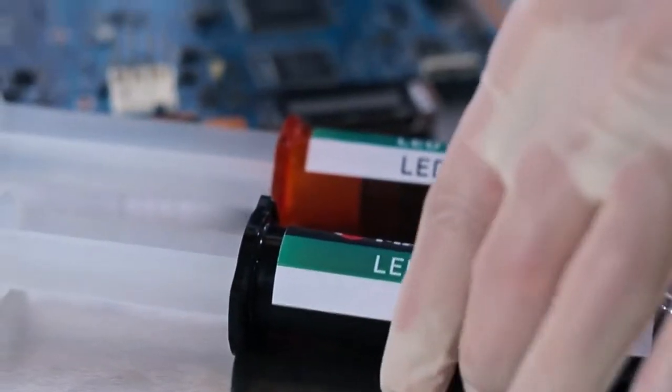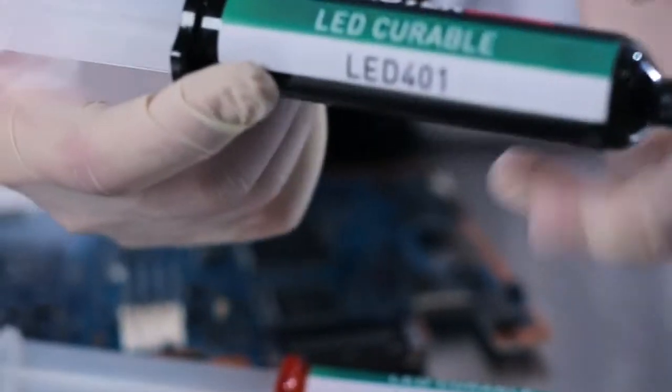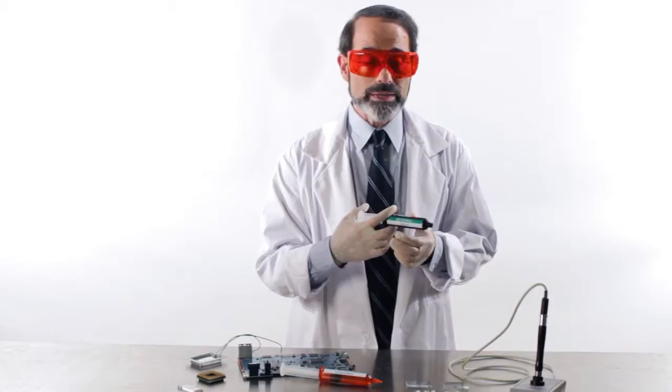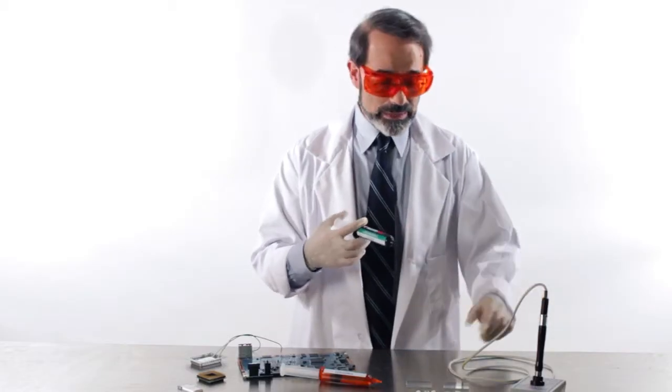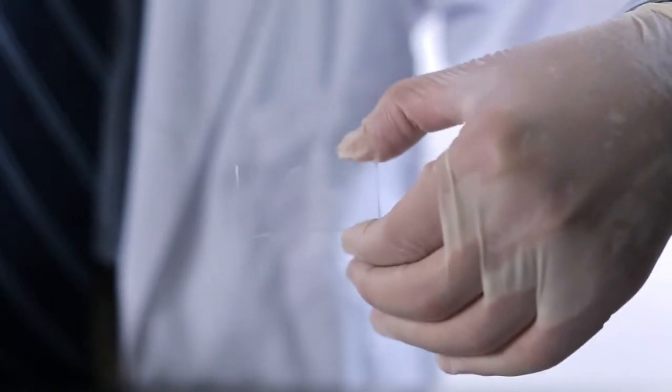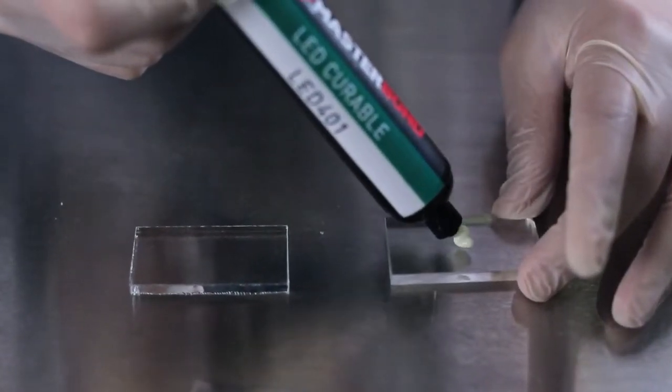Here we have a syringe filled with Master Bond LED 401, an LED lamp, and a glass substrate. Using the syringe, I will apply the adhesive to the glass surface. The formulation is available in optically clear or opaque white.